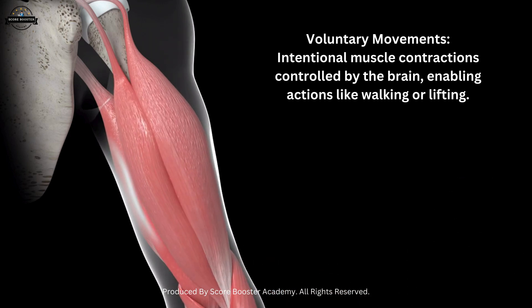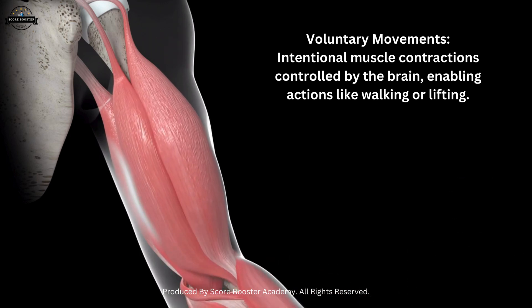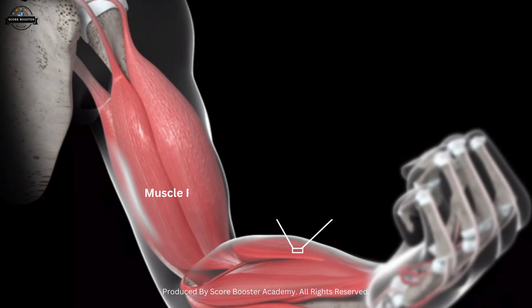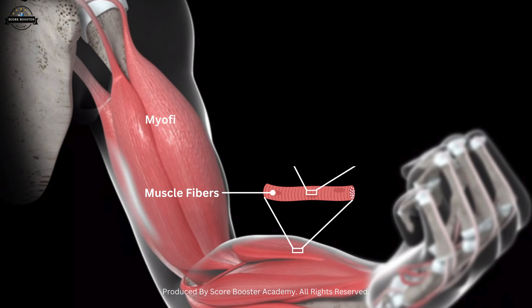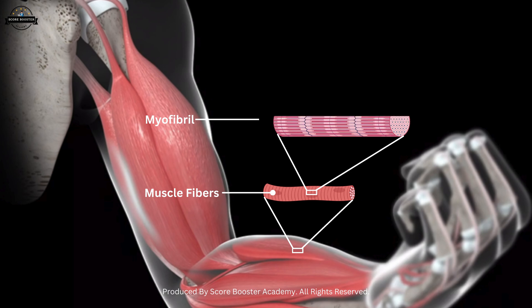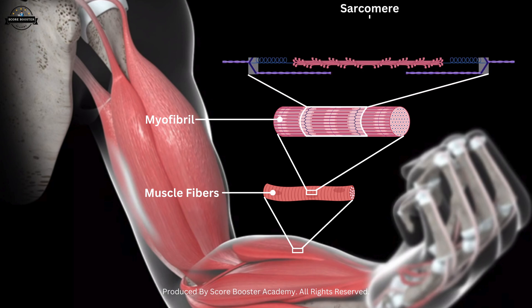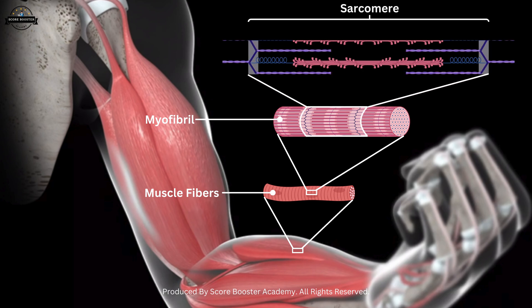These muscles are composed of long, cylindrical cells known as muscle fibers. Within these fibers are myofibrils, which are the actual contractile elements. Myofibrils contain repeating units called sarcomeres, the fundamental units of muscle contraction.